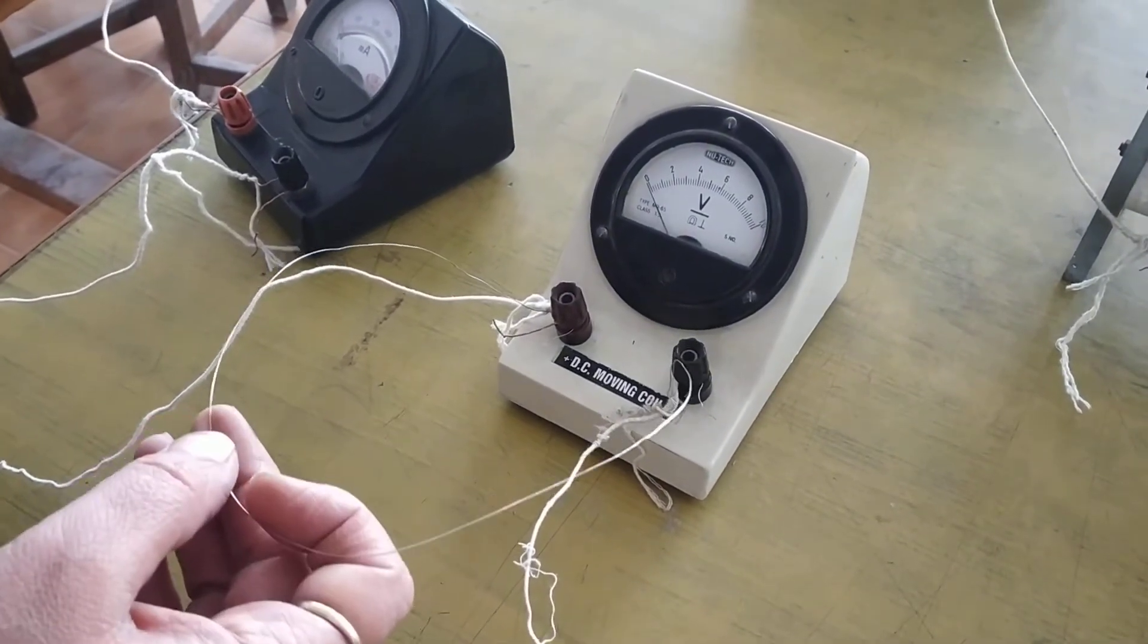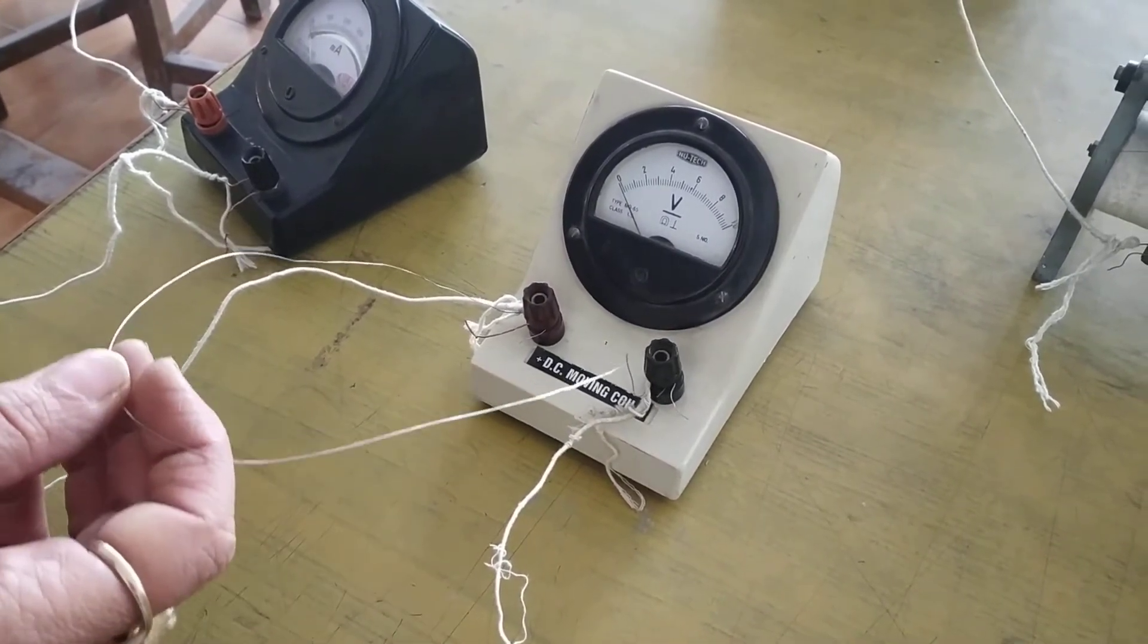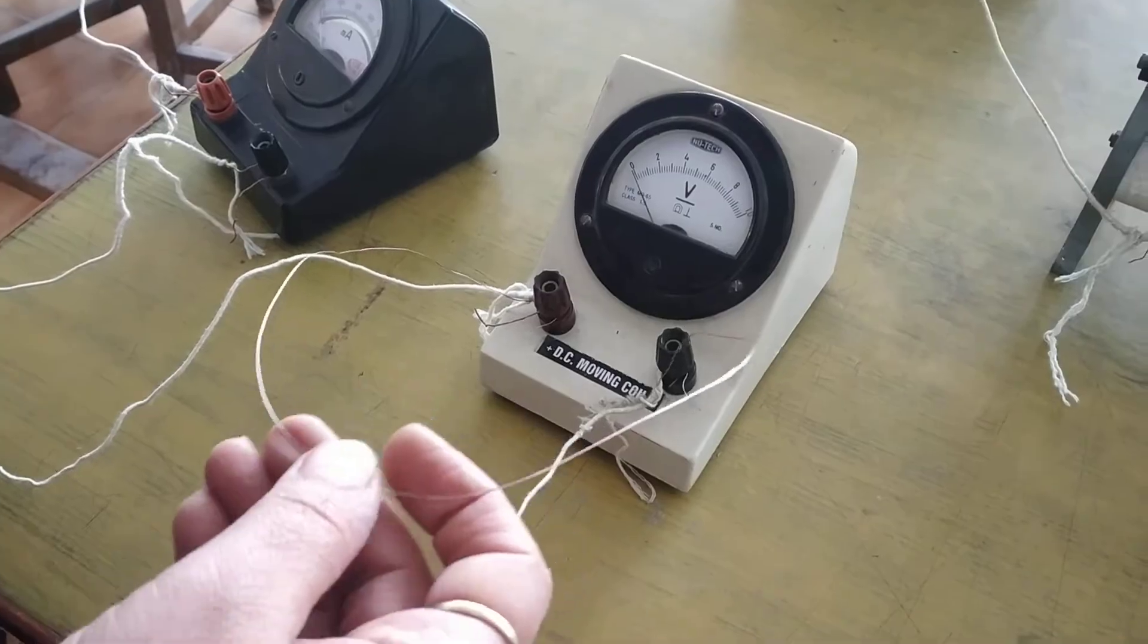This wire is made of an alloy called constantan. The property of this alloy is that it has very high resistivity and a low temperature coefficient of resistance.